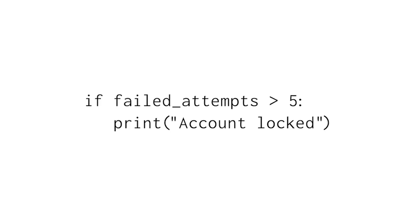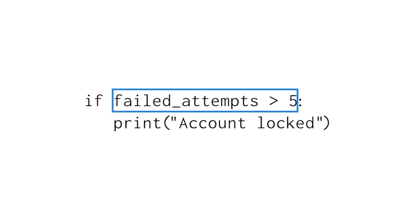Let's explore an example. We'll instruct Python to print an account locked message any time the failed login attempts are greater than 5. The keyword IF tells Python to start a conditional statement. After this, we indicate the condition we want to check — in this case, if the user has more than 5 failed login attempts. Notice how we're using a variable called failed_attempts. In our complete code, we will have assigned a value to failed_attempts prior to this IF statement.